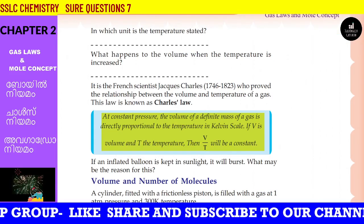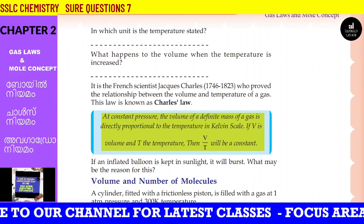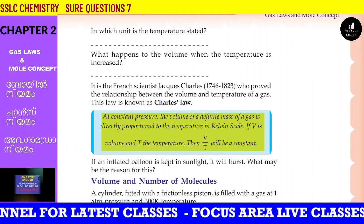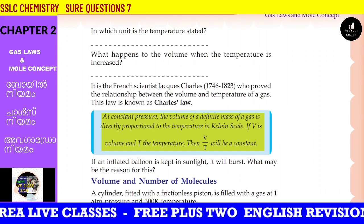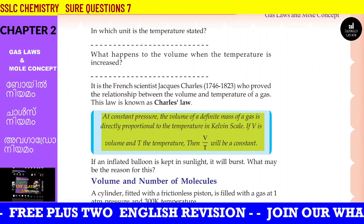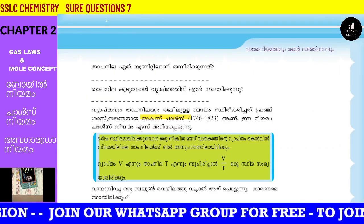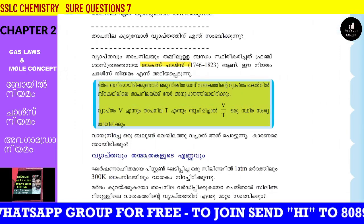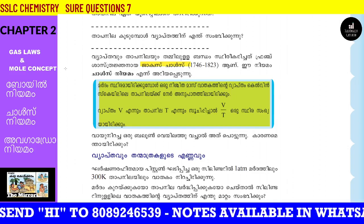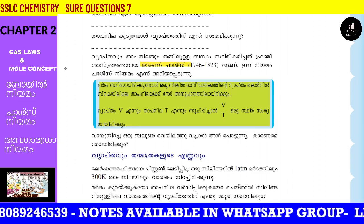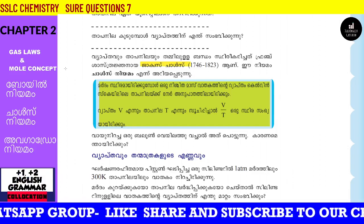Now, attention to this: at minus 273 degrees Celsius — that is, negative 273 degrees Celsius — the volume of the gas becomes zero.